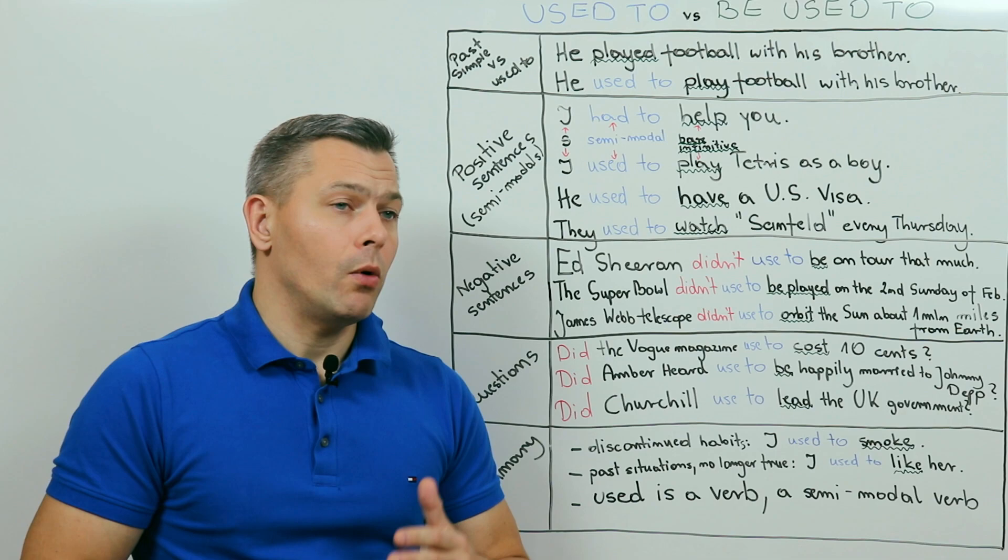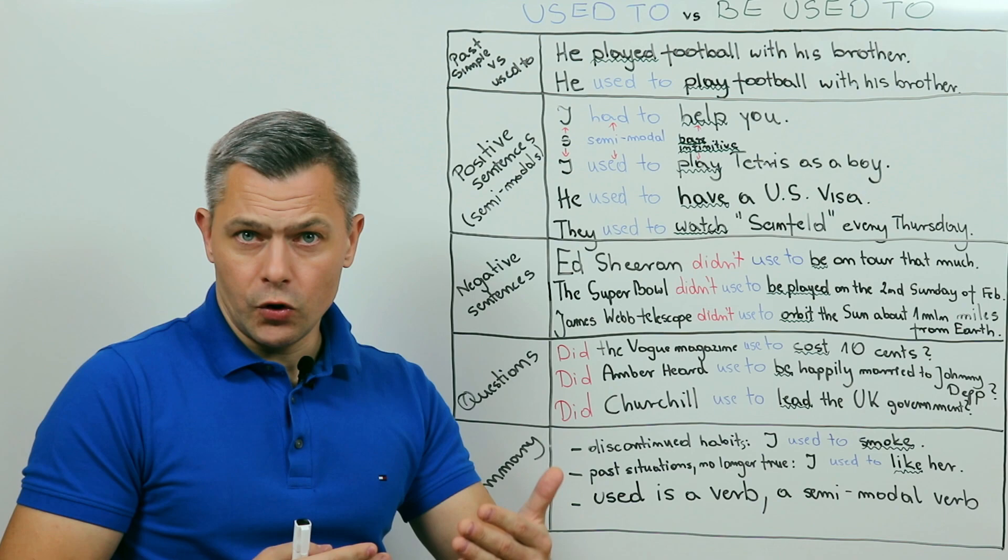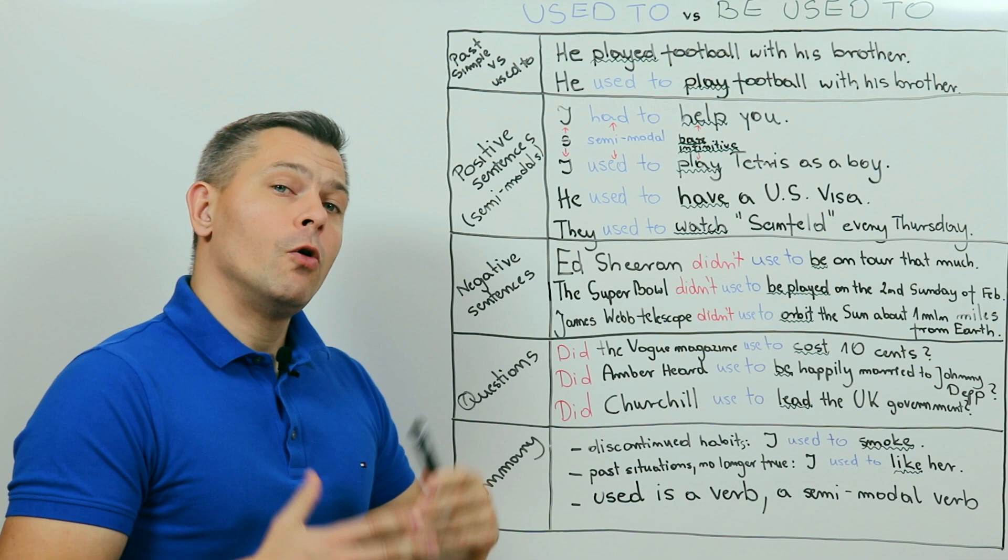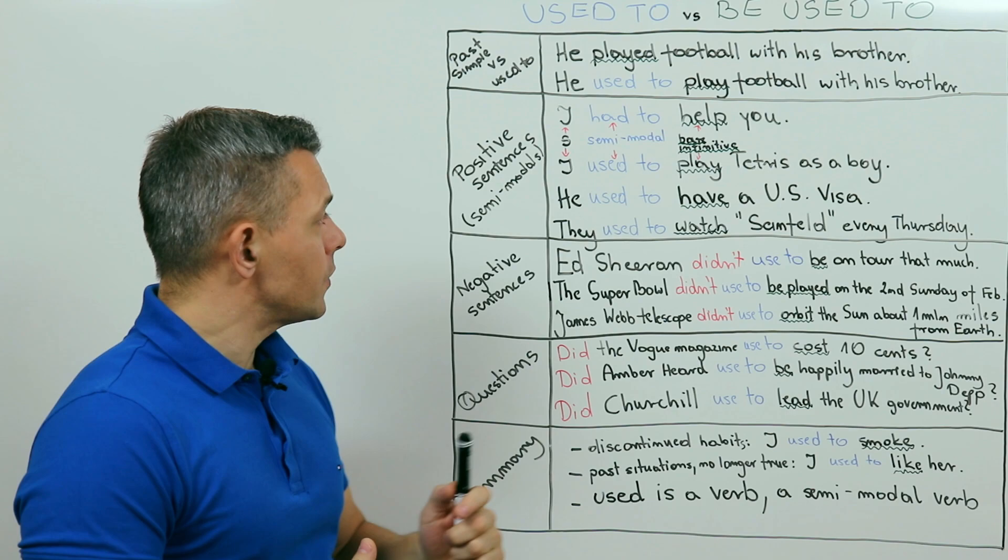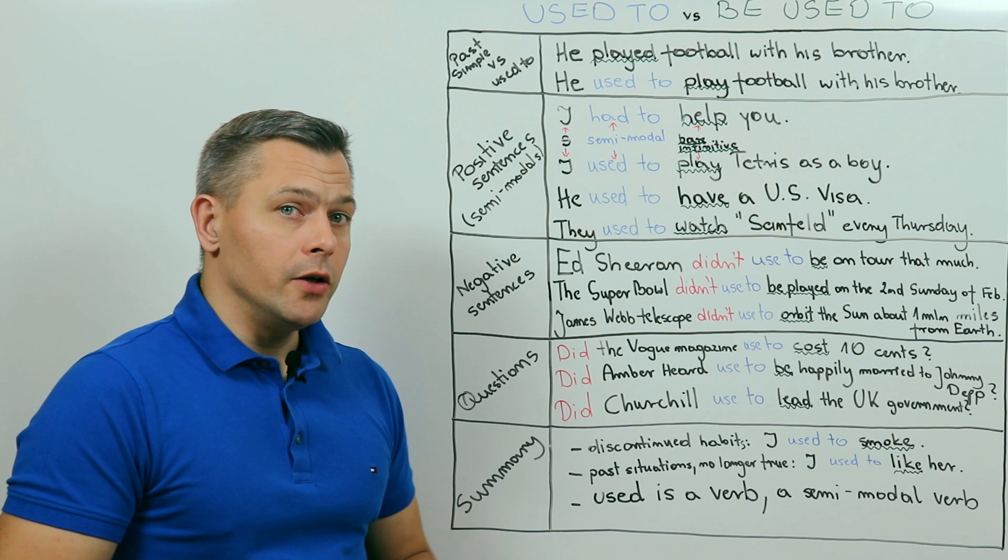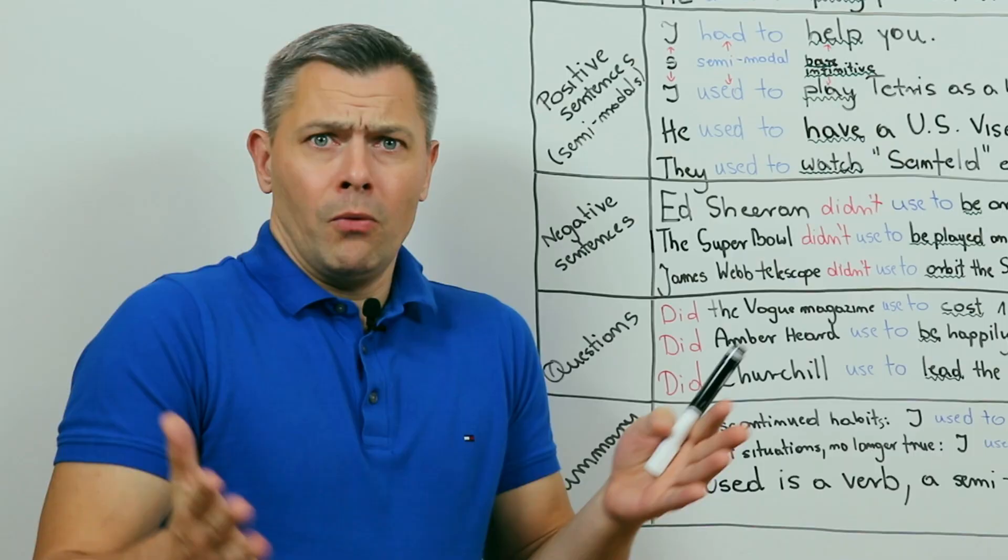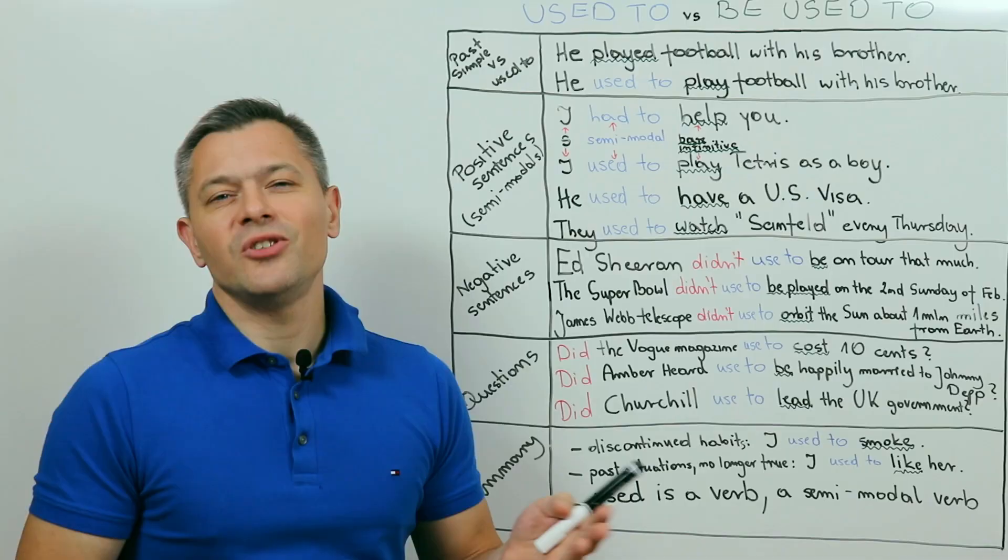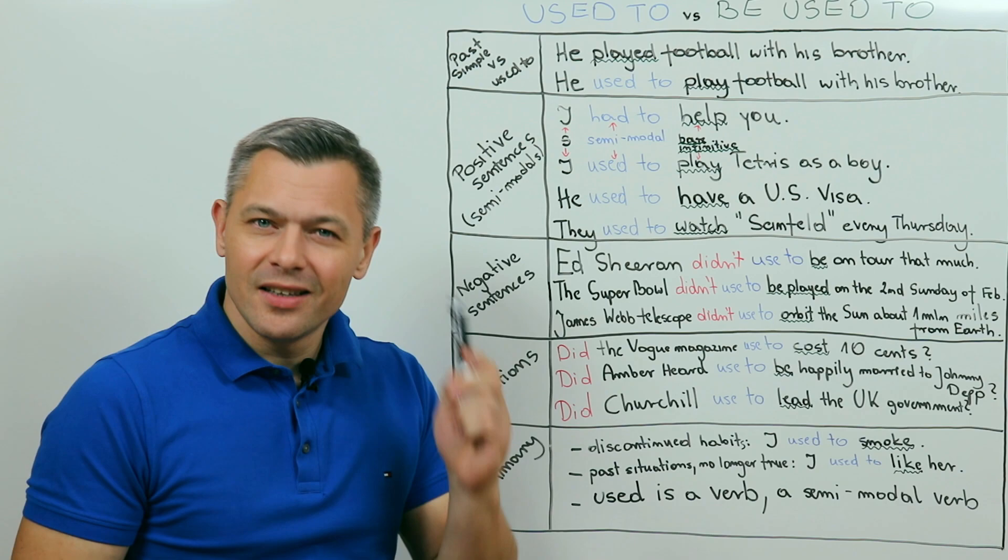Having clarified all the differences and similarities between past simple and used to, we can now focus on the latter. To help us understand how a sentence with used to is formed, we will use this past simple sentence here. We obviously have the subject and then we have two verbs. The first one is in its past form and is followed by a to. Why? Well, this is because it is a semi-modal verb.